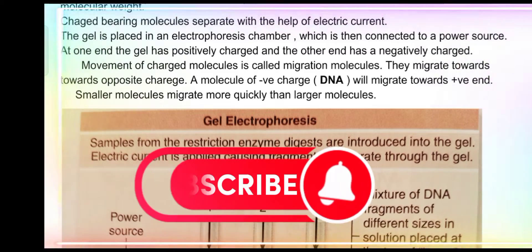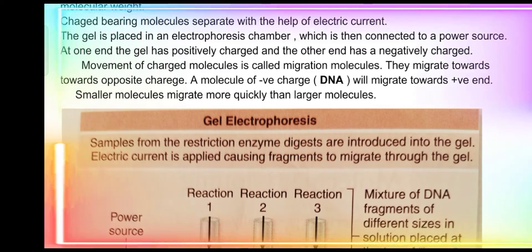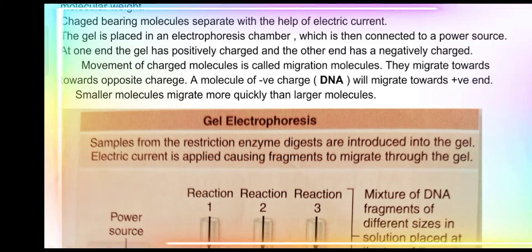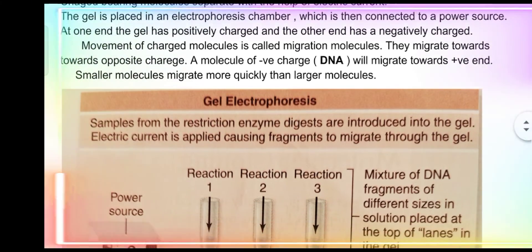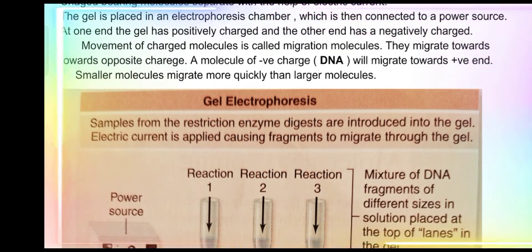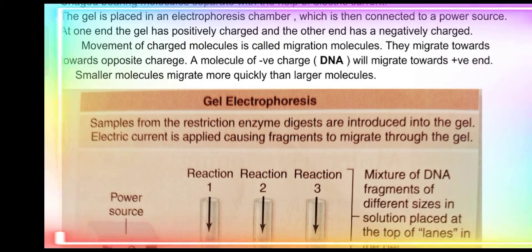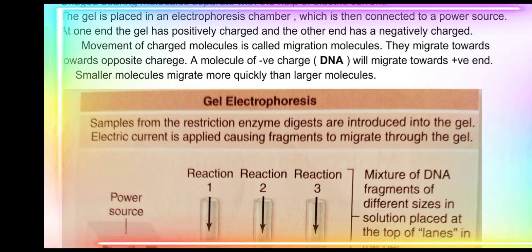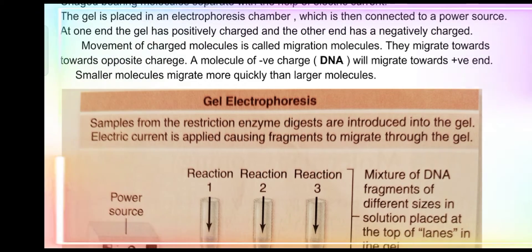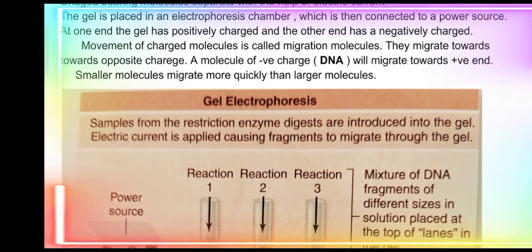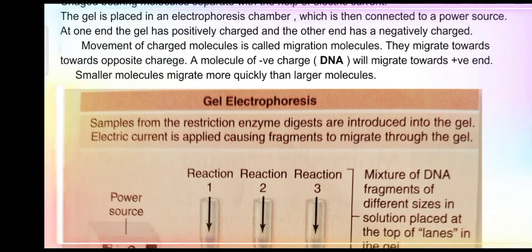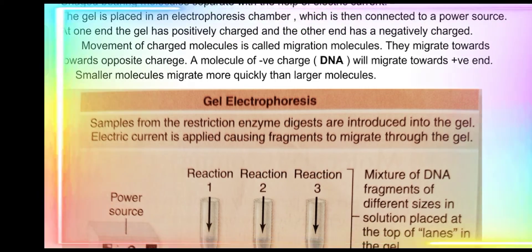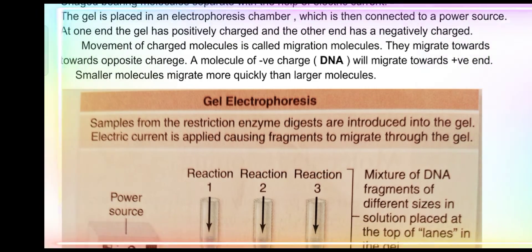Electrophoresis chamber کے اندر agarose gel رکھیں گے اور اسے electric current کے ساتھ connect کریں گے۔ جب connect کریں گے تو ایک حصے پر positive charge آ جائے گی اور دوسرے حصے پر negative charge آ جائے گی۔